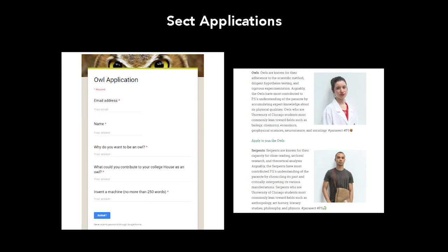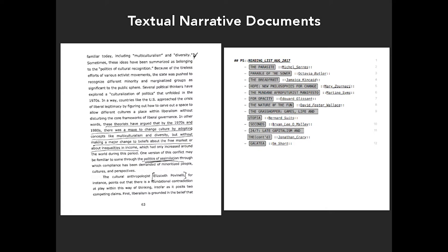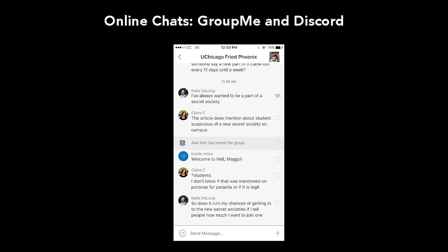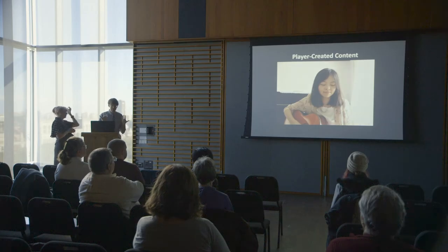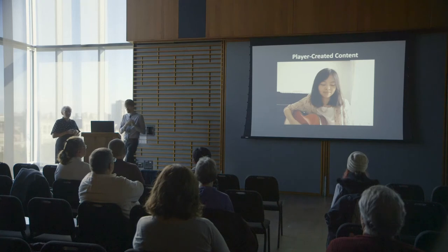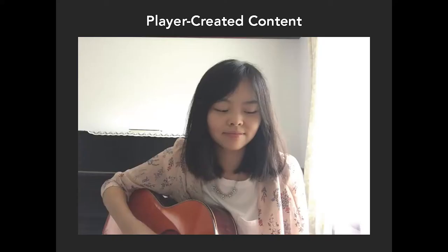We had students apply to different sects of the secret society, playing on the Harry Potter theme. Someone in the language office created a language for the secret society that started circulating at the language fair — we had a fake booth with this language. We circulated over a hundred pages of textual narrative documents that were novelistic in nature, plus a reading list. There were online chats among players and between players and characters. To our surprise, the players created a 50-70 page Google doc that documented everything about the game with links, solutions, and FAQs for people just joining.